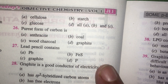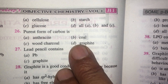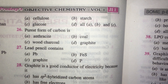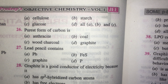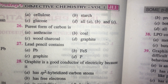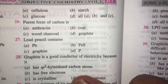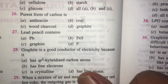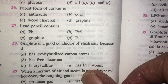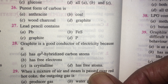The purest form of carbon is known as anthracite, which has less ash. Lignite is also a form of carbon available in the Kothagodem coal mines. Lead pencils contain only graphite — zero percent lead. Graphite is a good conductor of electricity because it has free electrons on sp2-hybridized carbon atoms, so the best answer is B.